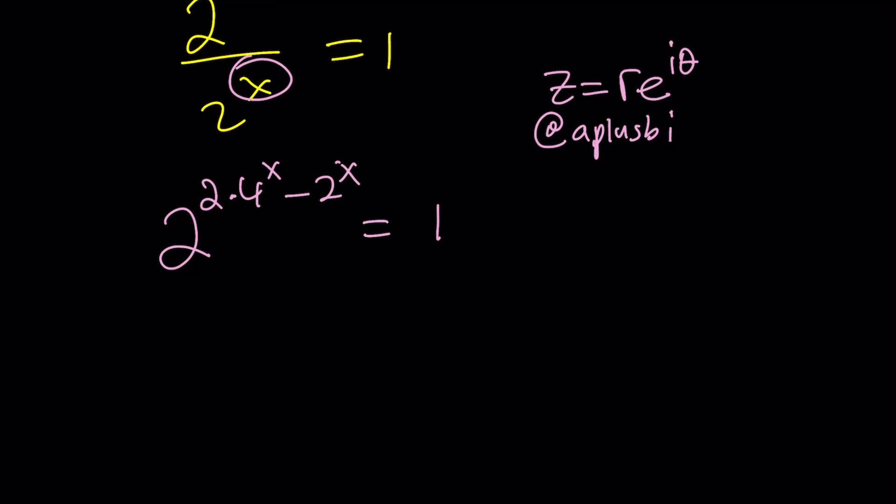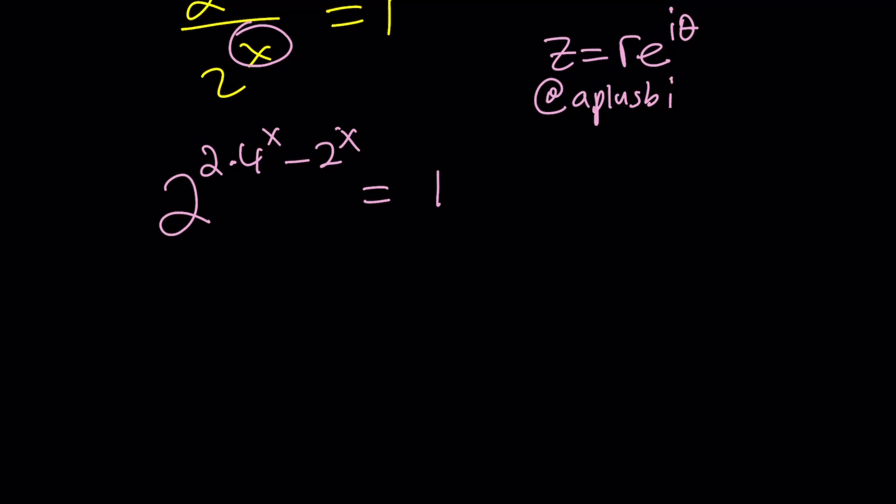First of all, 2 can be written as e to the power ln 2. That's what we're going to replace 2 with, because I need e at the base, Euler's number. And then for the right-hand side, I do need to be able to write 1 in polar form. 1 is basically 1 plus 0i.